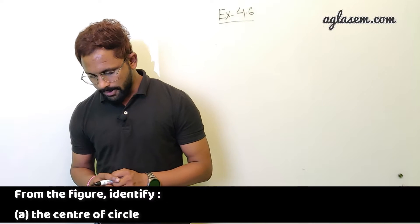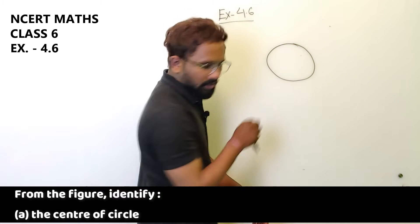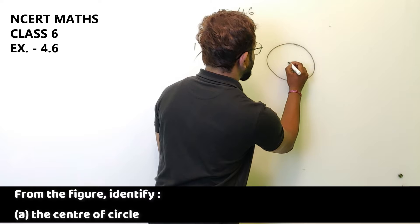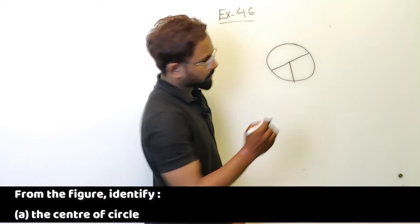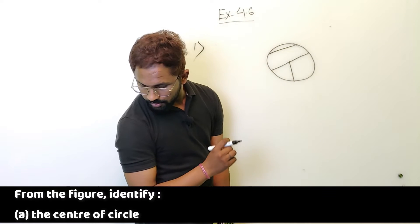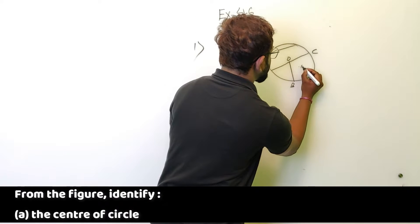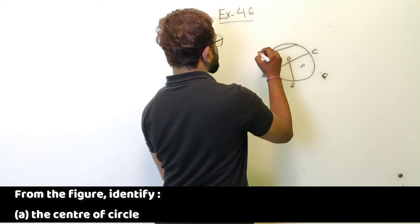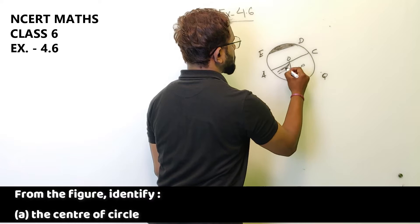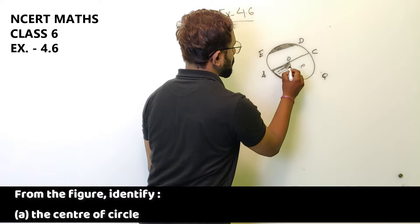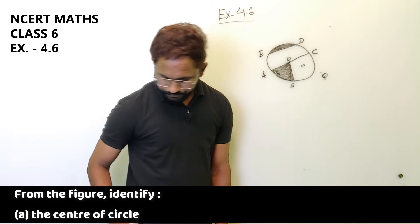The first question is from the figure, identify. Let me draw the figure. This is the figure and the center point. A, O, C. This is center O and C. This is B, this is P, and this point is Q. This is E and D. These portions are shaded. This is also shaded.